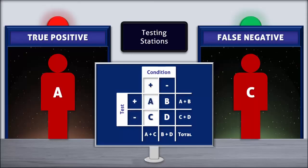Both true positive and false negative tests imply that the condition is present, but with true positives the condition is detected, whereas with false negatives the condition is missed.